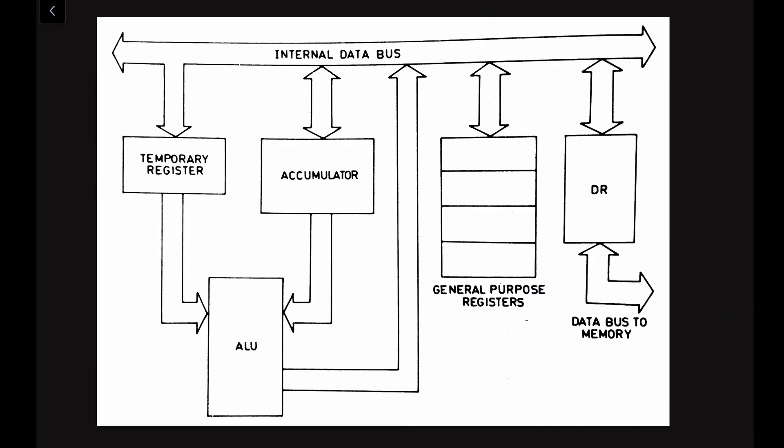Now let us look at the data flow in the microprocessor. The execution of most instructions requires the flow of data. The data word flows either from the memory or the input-output device — you can see here the data bus is connected to the memory unit and to the input-output device, which is connected through the internal data bus. The data word flows in the microprocessor through the data bus and is placed in the accumulator.